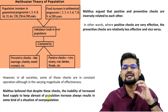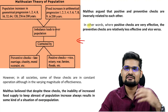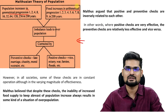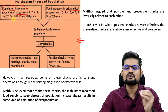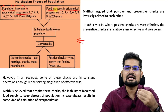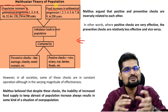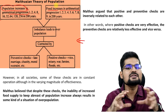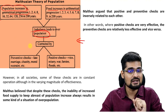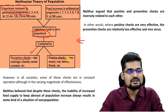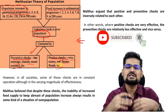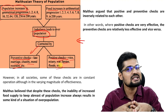Summarizing Malthusian theory through a flow diagram: population increases in geometrical progression — 1, 2, 4, 8, 16 — while food increases in arithmetic progression — 1 plus 1 plus 1. This imbalance leads to overpopulation, true for many developing countries today, and it can be corrected by preventive checks such as late marriage, chastity, and moral restraint, or by positive checks such as misery, war, famine, floods, and pandemics — which are currently happening in the world.